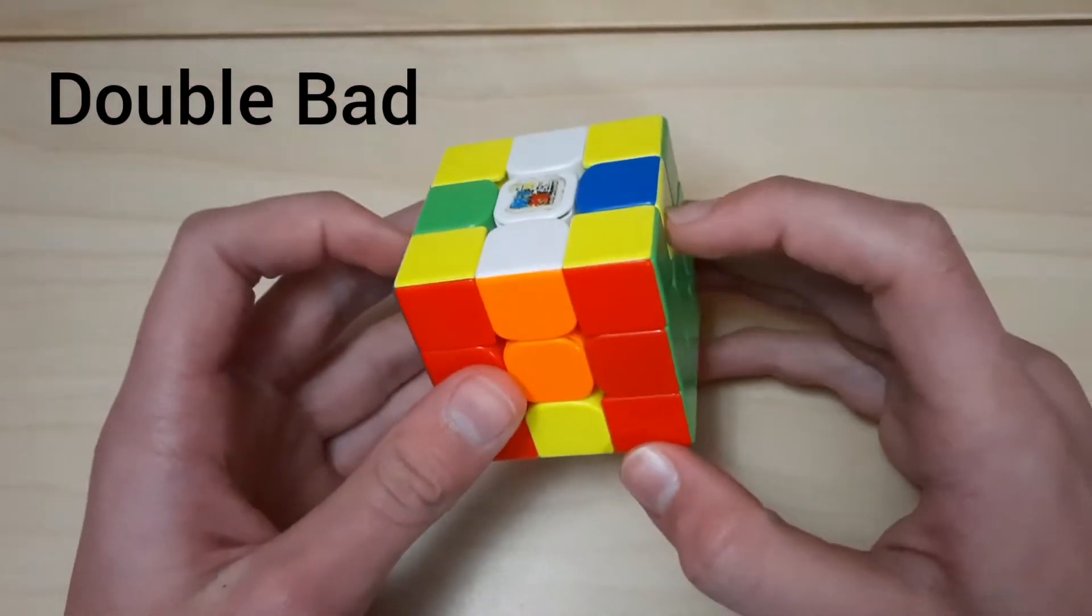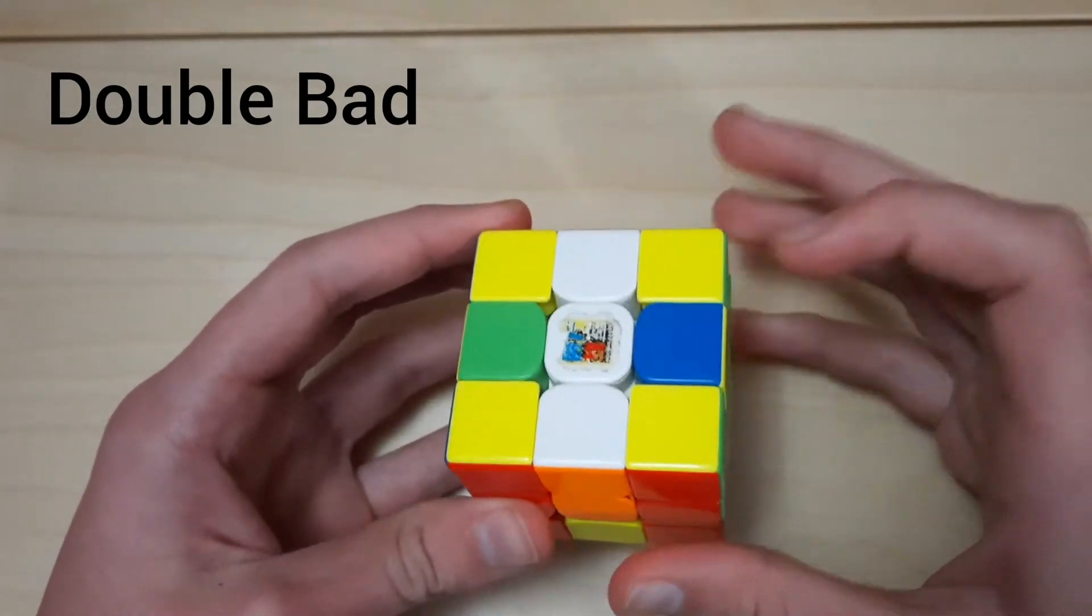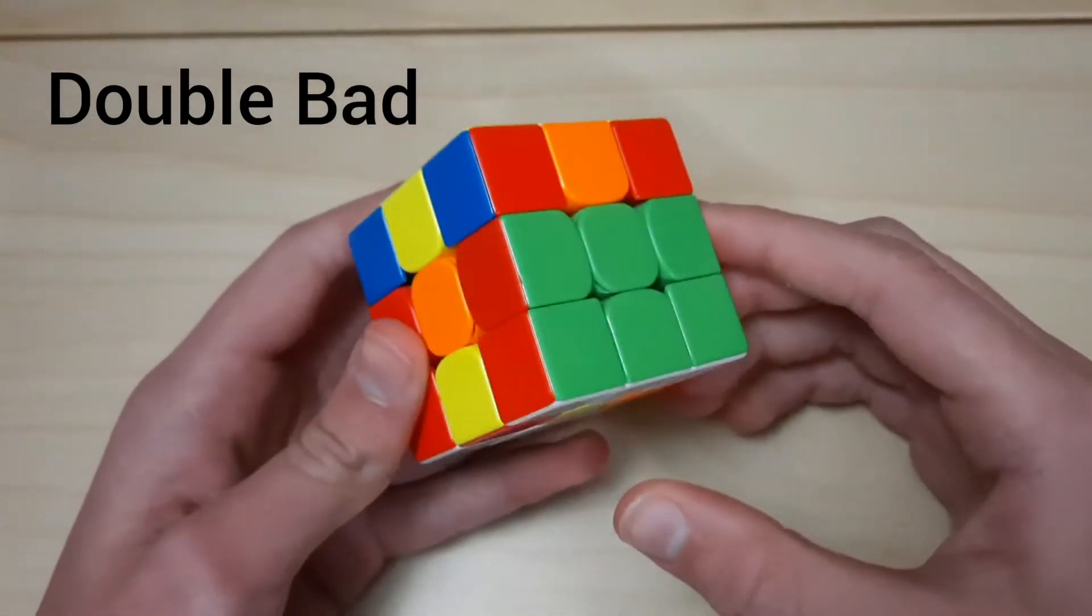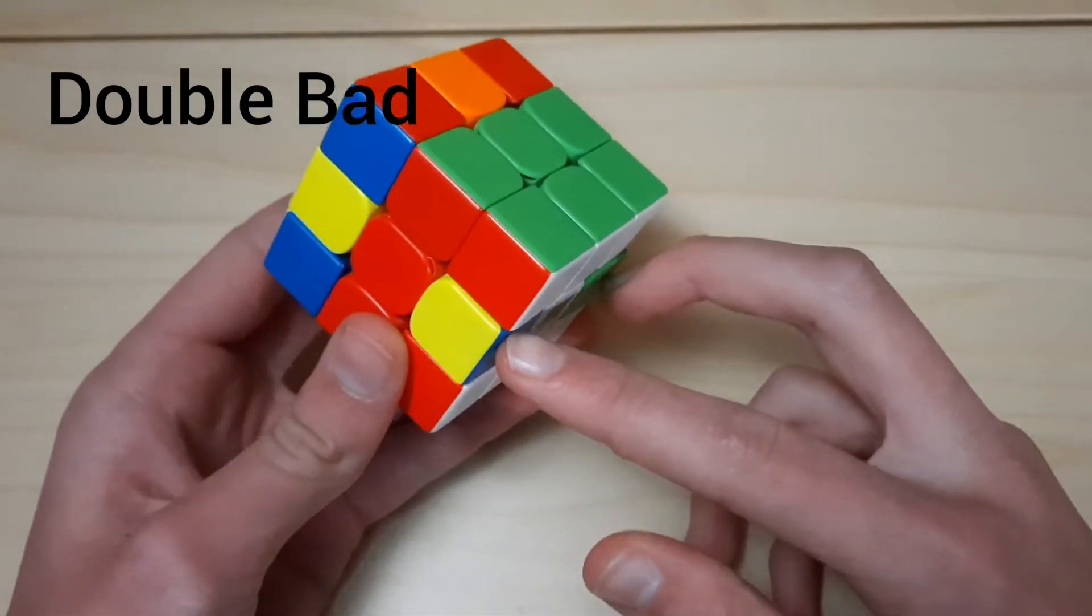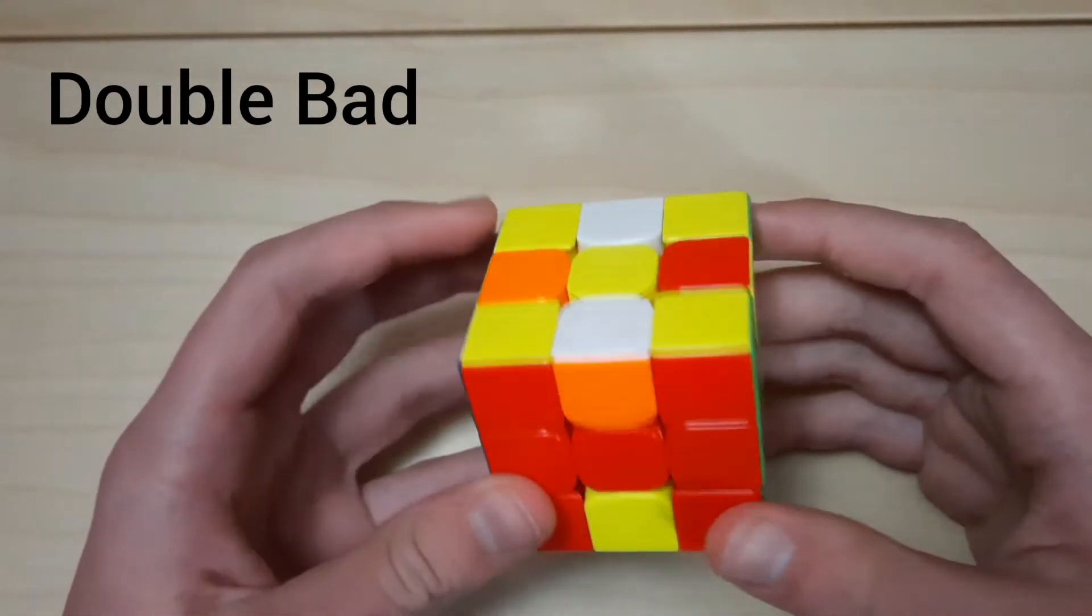So in this first case they're both in the top layer and we actually want them in the bottom layer. So we're going to bring them to the bottom layer by placing them in the M slice, you could do a U or a U', and then M2 to get them in the bottom. And then we're going to set up so that these edges are on the left and right, even though they aren't the left and right edges.